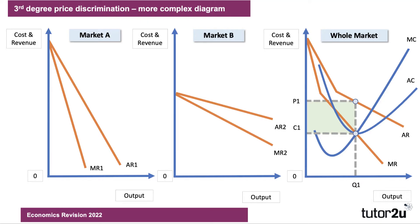So in the right-hand diagram, that would be the price and the profit without any form of price discrimination. However, what they could do is decide to segment the market and charge a different price. If demand is highly price inelastic, you can get away with charging more — and firms do. Whereas when demand is price elastic, consumers are much more sensitive to the price, perhaps lower incomes, so you charge a lower price for the same good or service.